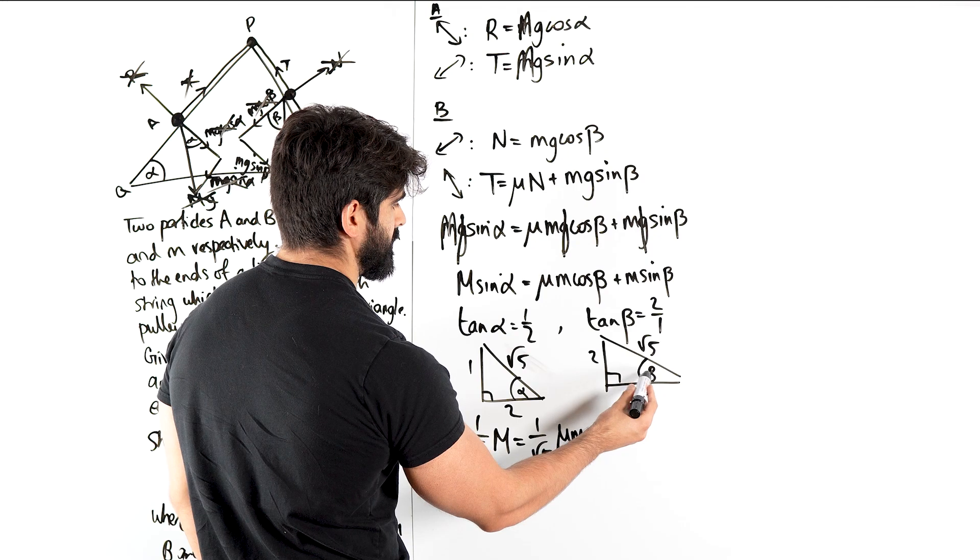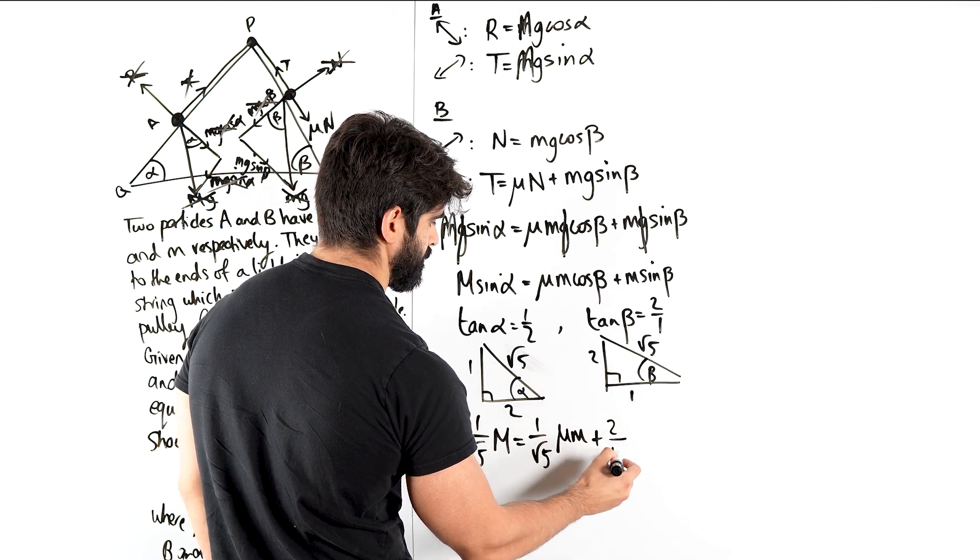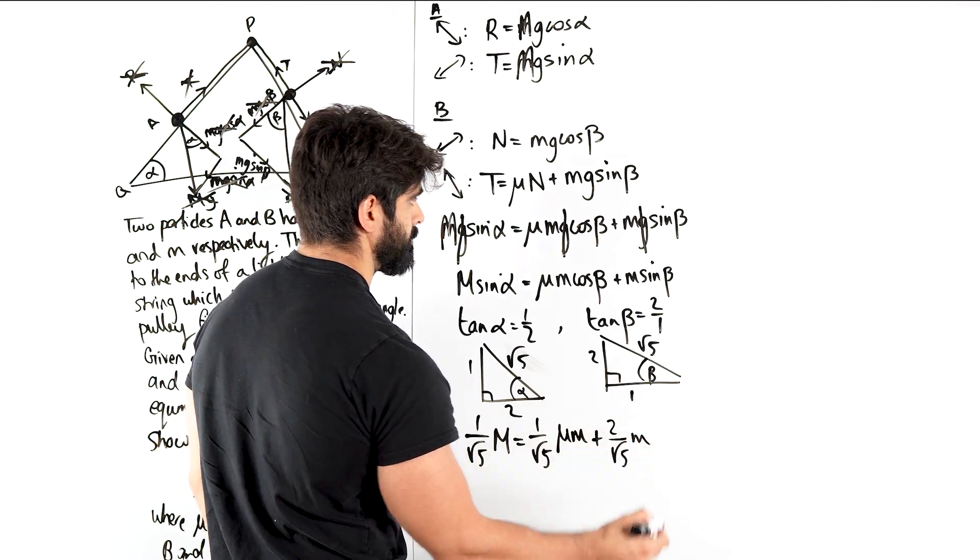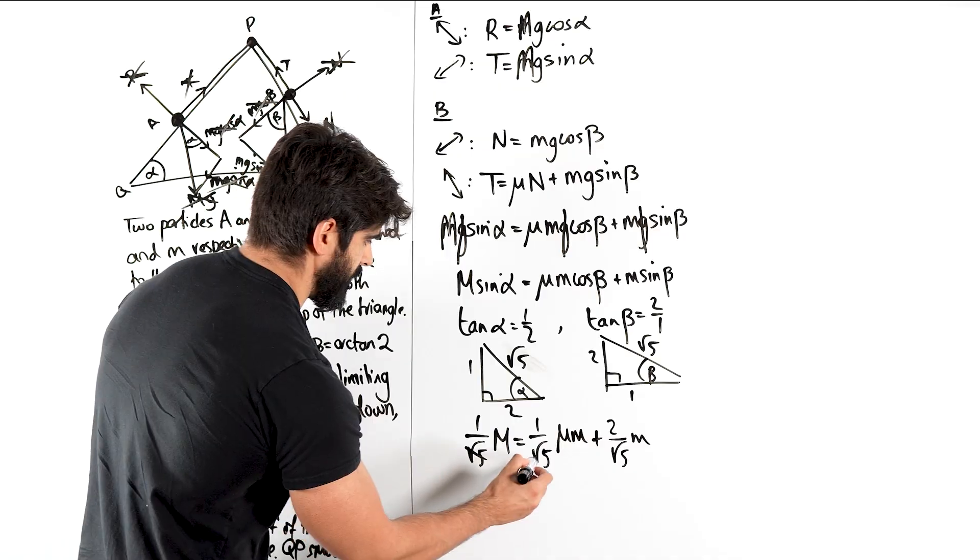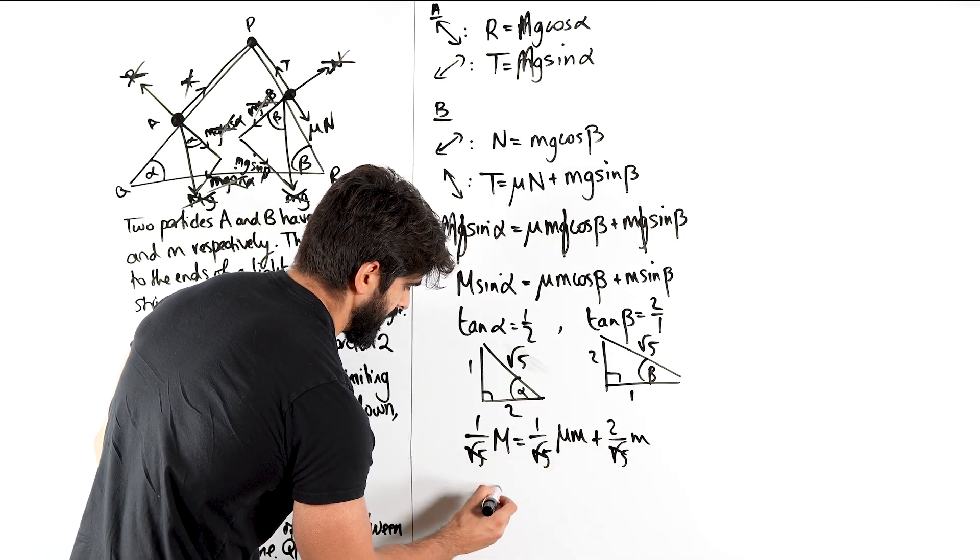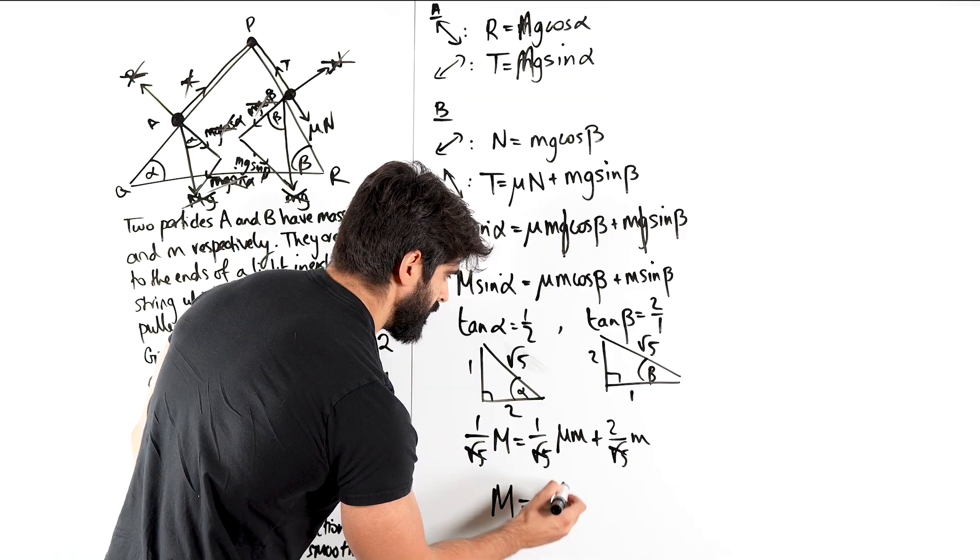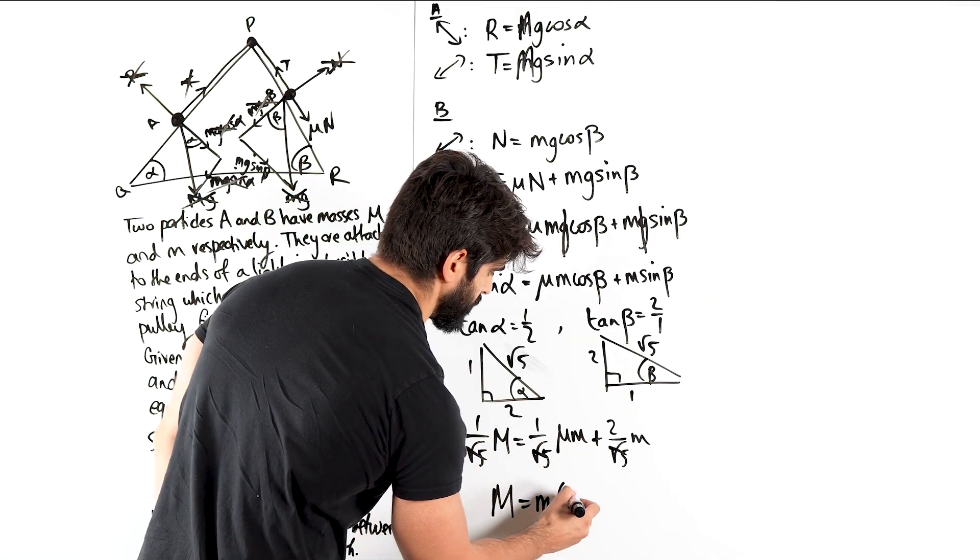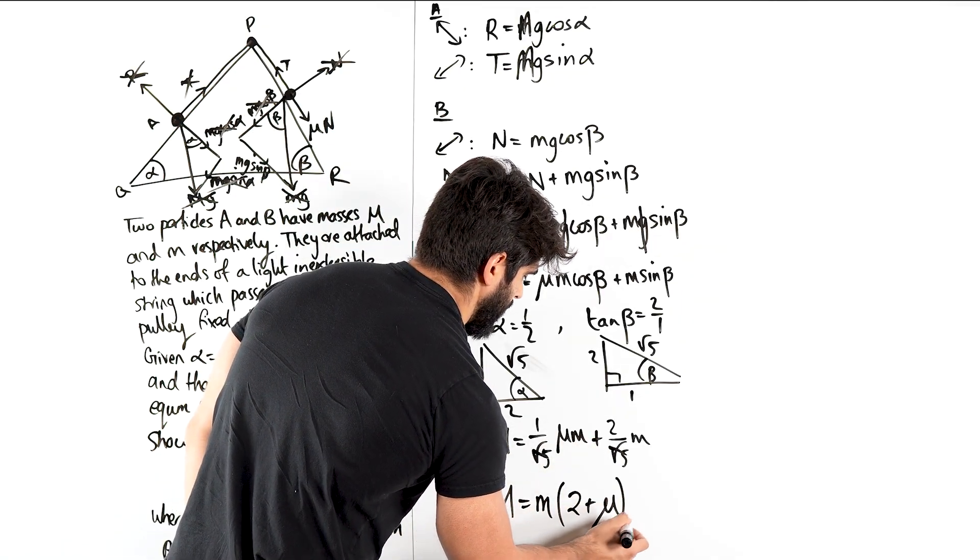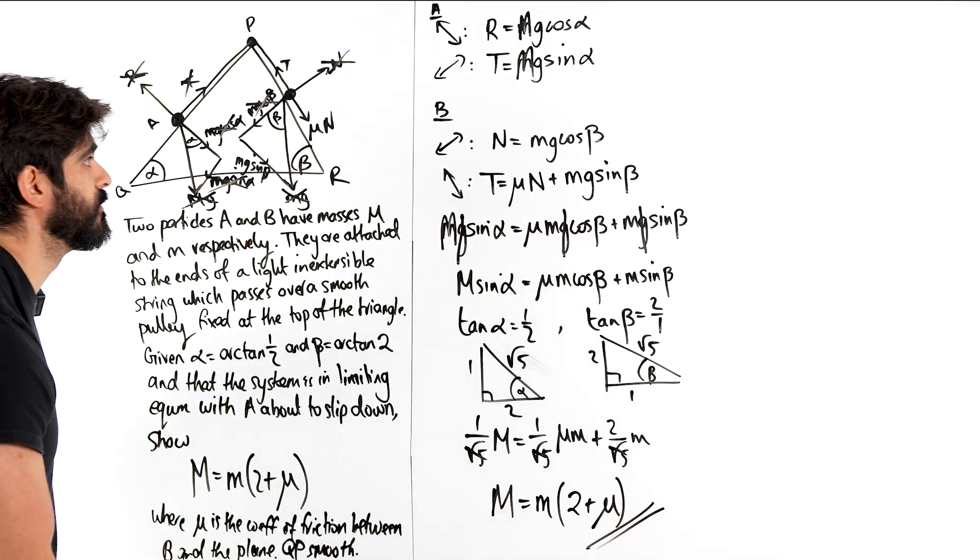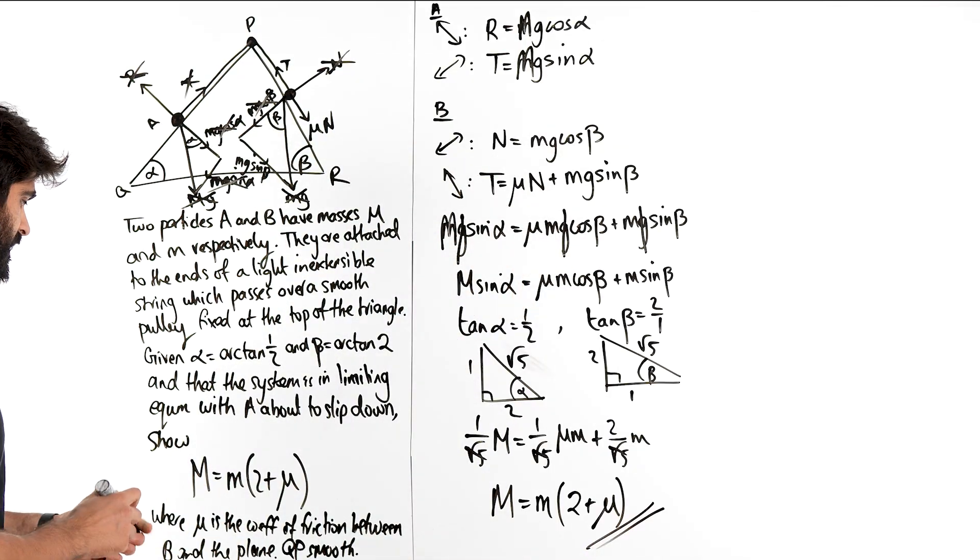And sin beta is 2 over root 5 times 2 by root 5. So if I get M, we can factorise on M here, we get mu plus 2, 2 plus mu, mu plus 2, same thing. And that guys, is proved. So actually it works out really clean.